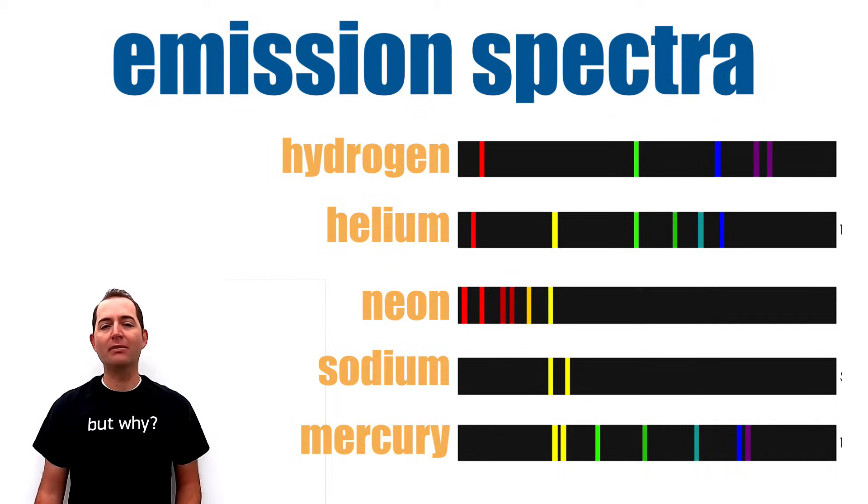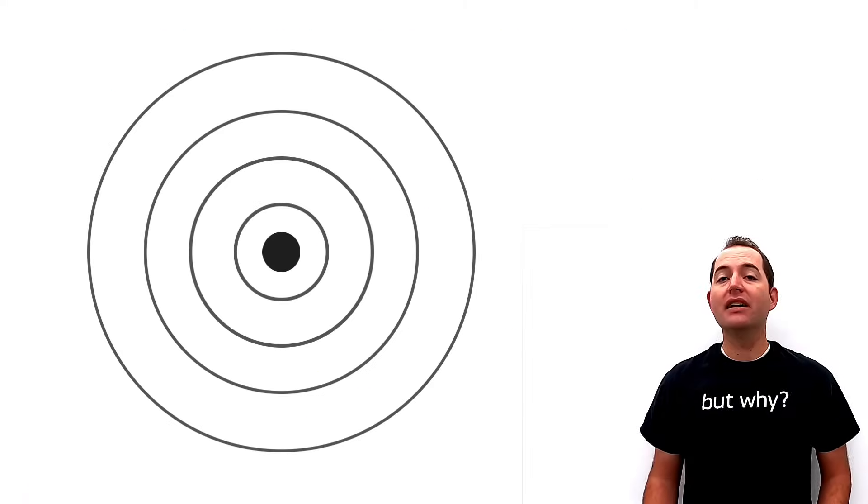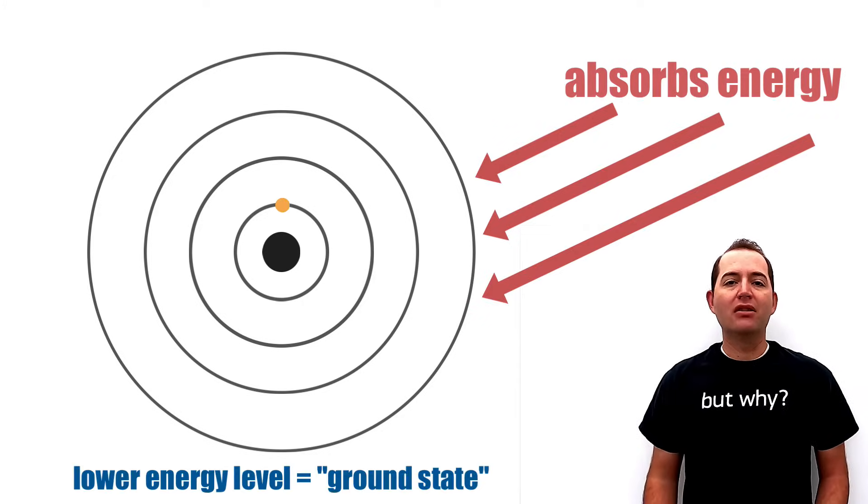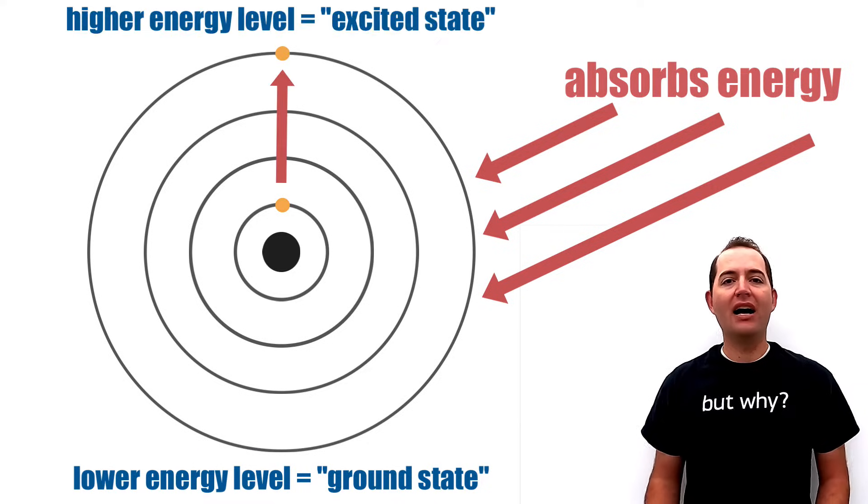Using a simplified Bohr model of an atom, we can note that when an atom absorbs energy from its environment, an electron will move from a lower energy level or ground state to a higher energy level or excited state.